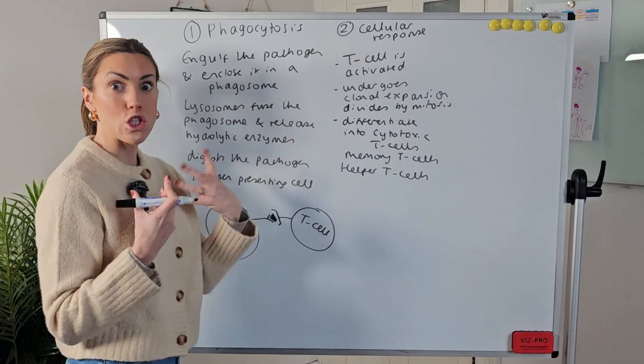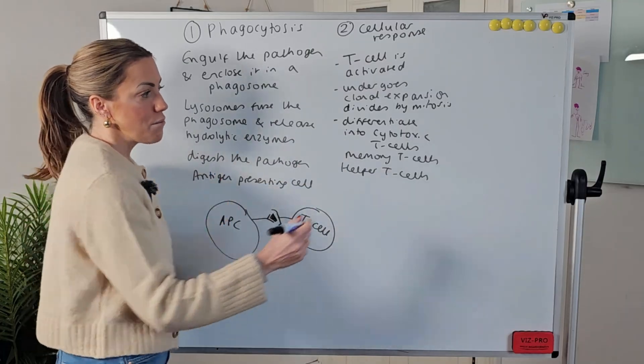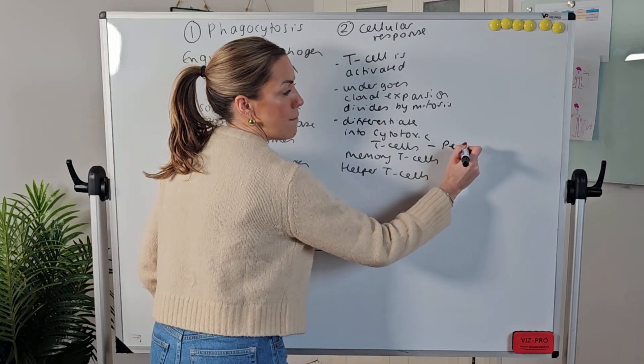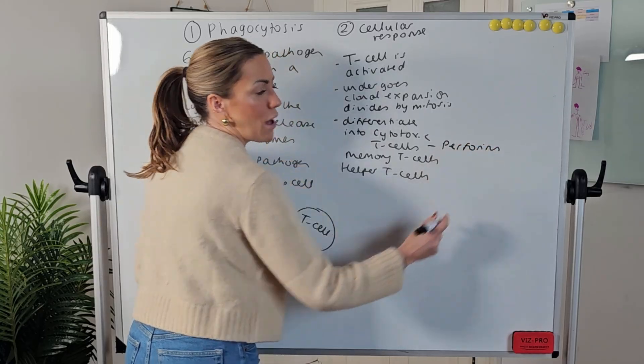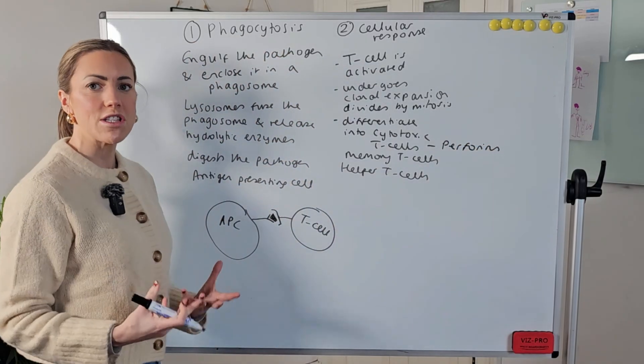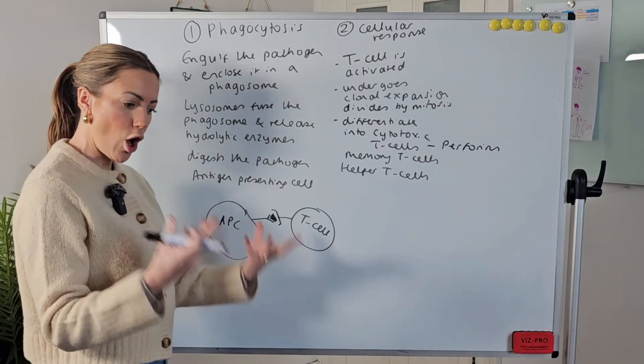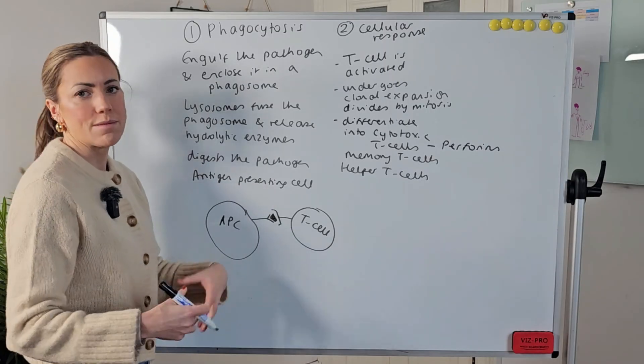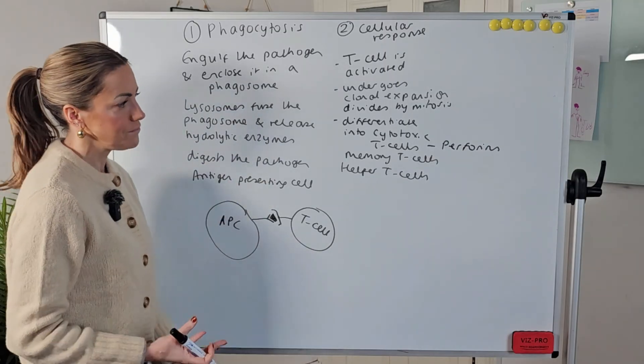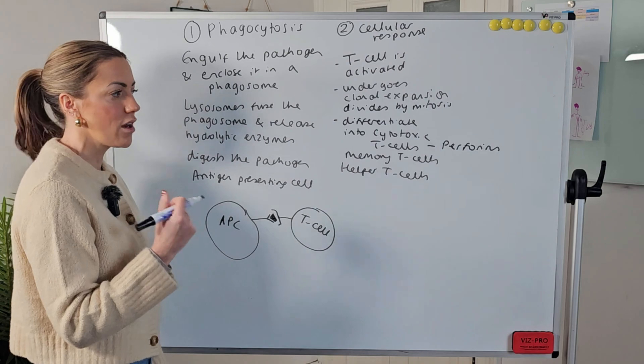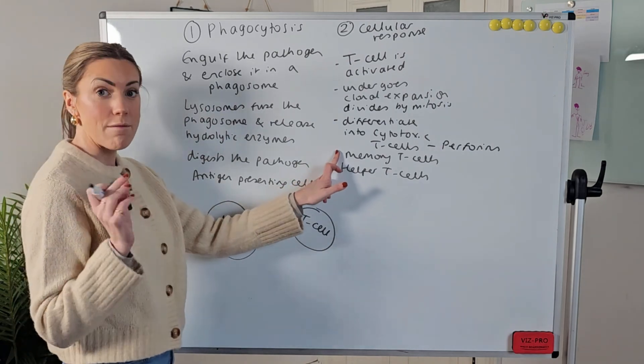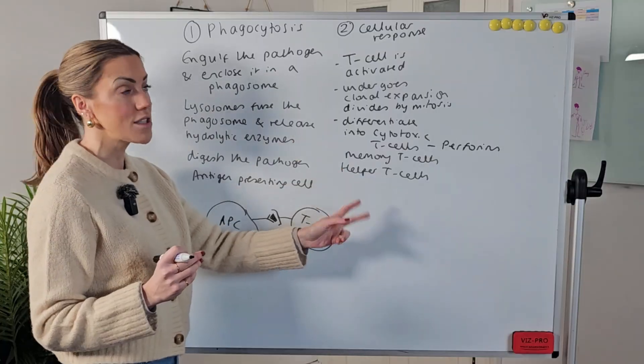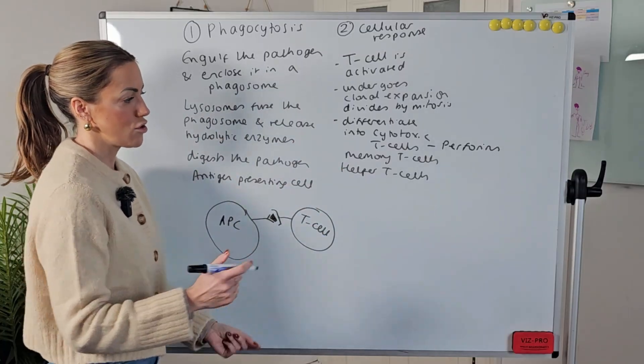Okay so we've got cytotoxic T cells memory T cells and helper T cells now the cytotoxic T cells can destroy pathogens they can produce chemicals an example of one of those chemicals would be perforins. Perforins for example can damage the bacterial cell walls they can make holes in the bacterial cell walls so loads of water enters by osmosis and they are destroyed. Memory T cells give long-term immunity because they remain in circulation and the helper T cells are going to link us to the third part of our story.